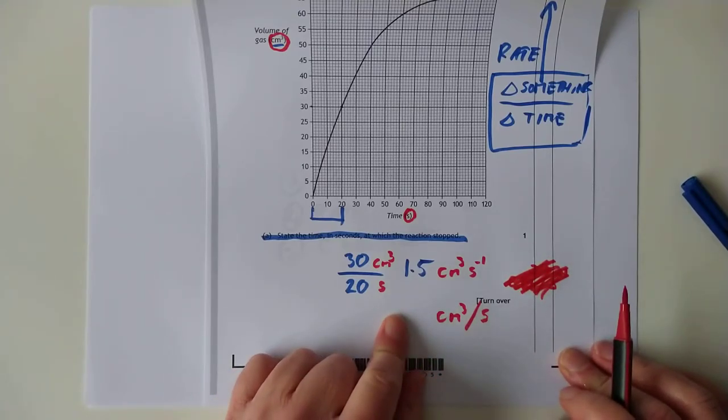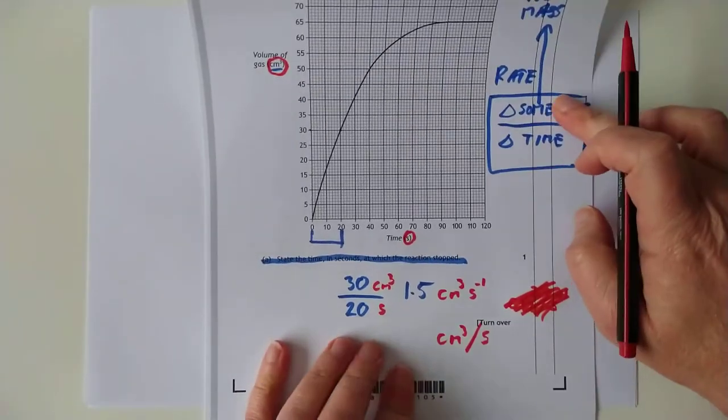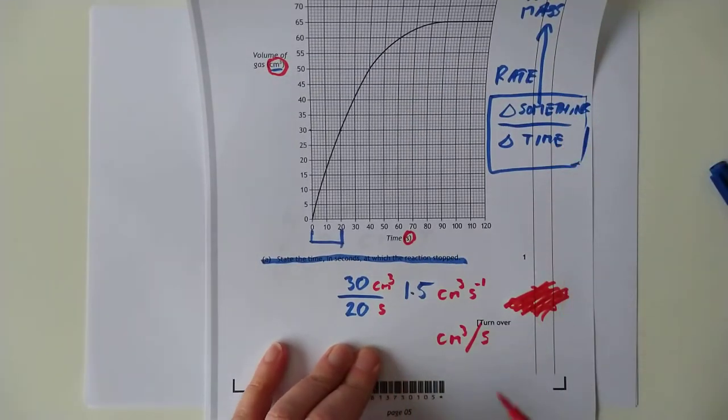And that's how you calculate rate, folks. So it's the change in a quantity that you're measuring divided by the time that it took for that change to happen.